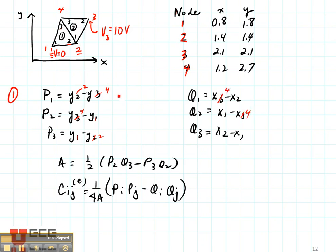So P1 is going to be Y2 minus Y4. Over here, Q3 is going to be X2 minus X1 and so on.